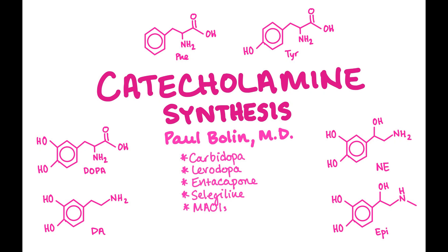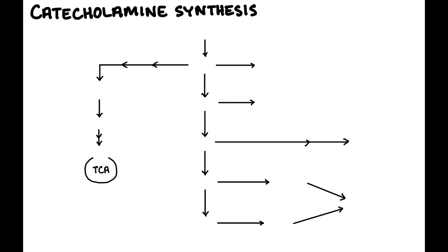We talked about the different ways that tyrosine can go — it can go to the TCA cycle, it can make thyroid hormone, it can ultimately make melanin. But the big thing that tyrosine does that gets hammered on the USMLE is that it is a precursor for catecholamines, and so is phenylalanine by extension. So we're really going to focus on how catecholamines are synthesized, and because there are no diseases that directly affect this pathway, we're going to talk about drugs that interfere with it and why they're used.